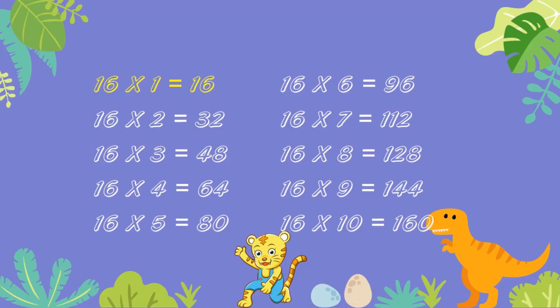16 ones are 16. 16 twos are 32. 16 threes are 48. 16 fours are 64. 16 fives are 80. 16 sixes are 96. 16 sevens are 112. 16 eights are 128. 16 nines are 144. 16 tens are 160.